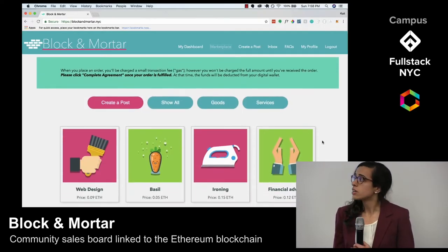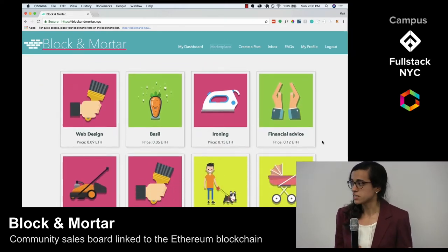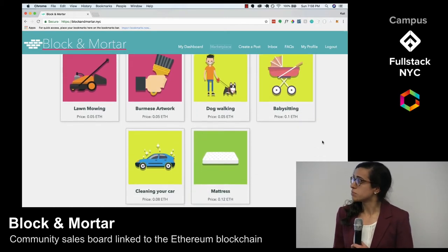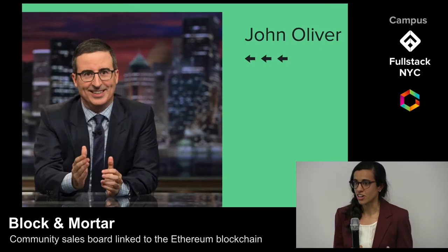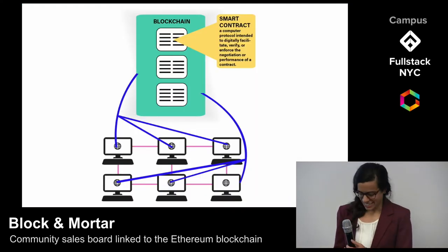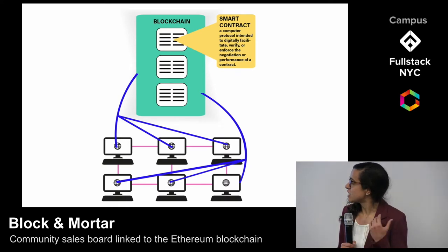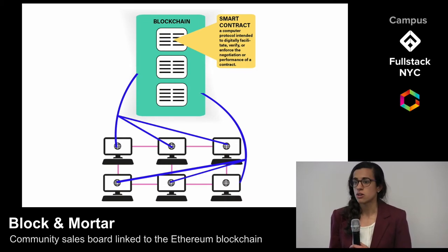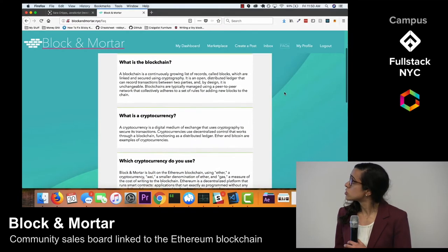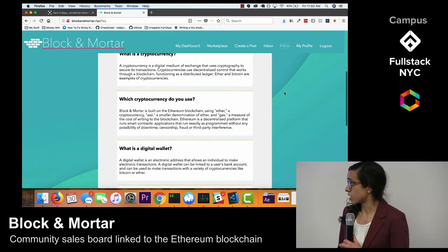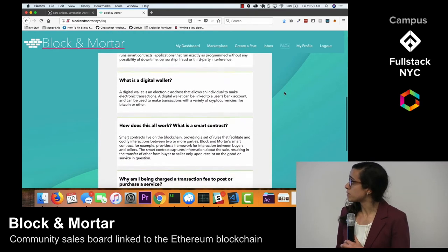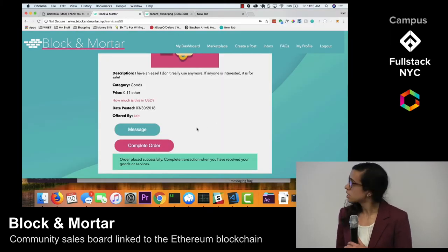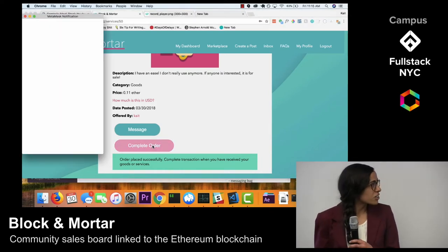Unlike Craigslist or TaskRabbit, Block and Mortar allows users to buy and sell goods and services using blockchain technology. You may be familiar with blockchain because of Bitcoin or John Oliver. A blockchain is a decentralized digitized public ledger that allows you to track transactions. We wanted to build this app so that we could lower the barrier to entry to blockchain technology. Our app provides a safe and secure environment for buyers and sellers to make transactions. I'm now going to pass it off to Annabelle, who will walk you through our app.